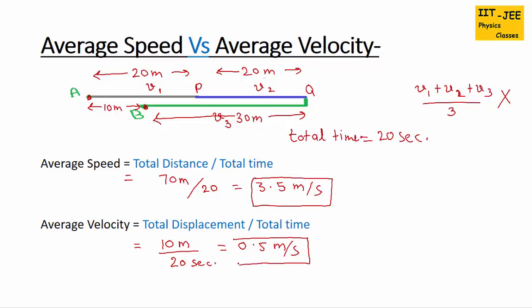Average velocity is a vector quantity, so it includes direction. The direction of average velocity is the same as the direction of displacement, which is always towards the ending point. So the displacement vector points towards B, which is to the east. Therefore, the direction of average velocity here is to the east.